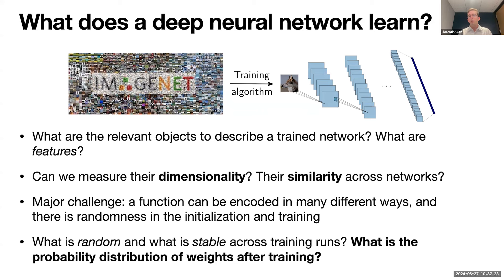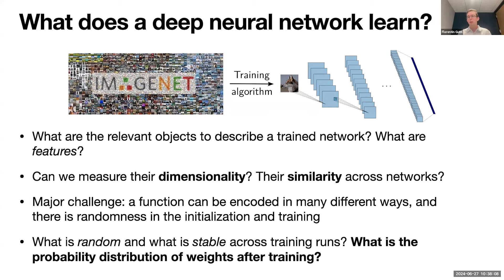This means the model is not identifiable — there are many parameter realizations corresponding to the same function. Additionally, there is randomness from both initialization and the stochastic gradient descent training algorithm. This combination of symmetries and randomness makes it hard to see anything by looking at the weights directly. So I ask: what is random and what is stable across training runs? If I train the same architecture twice on the same dataset with different random seeds, what do the two sets of weights have in common?